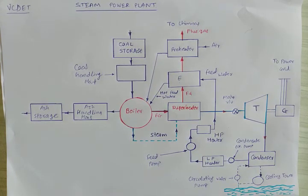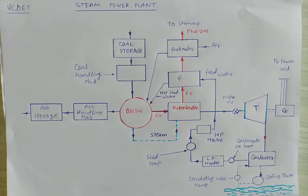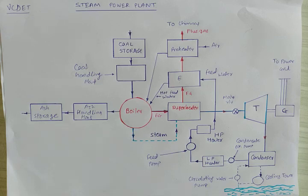The advantages of steam power plants: we can use cheaper fuel compared to other plants, less space is required compared to a hydropower plant, and it is cheaper in production cost compared to other plants. The disadvantages are: operating cost is very high, maintenance cost is also very high, the cost of the plant increases with increase in temperature and pressure, and a large quantity of water is required for the cooling tower.